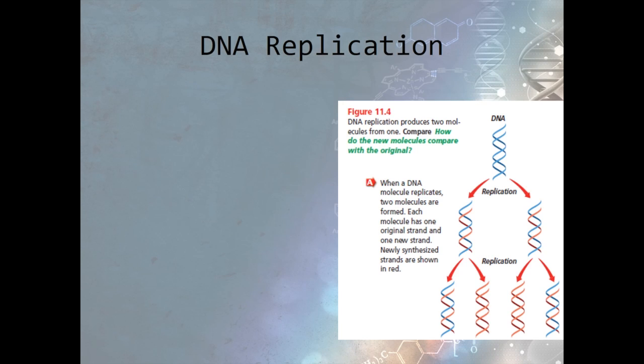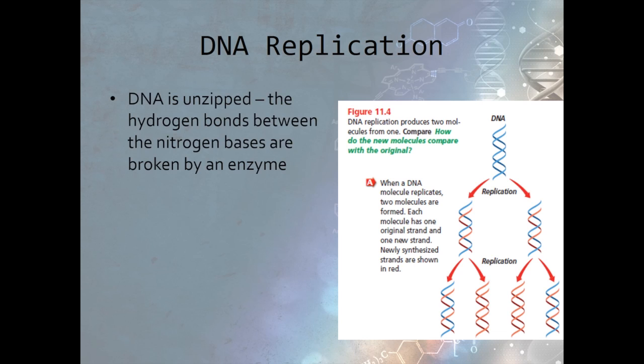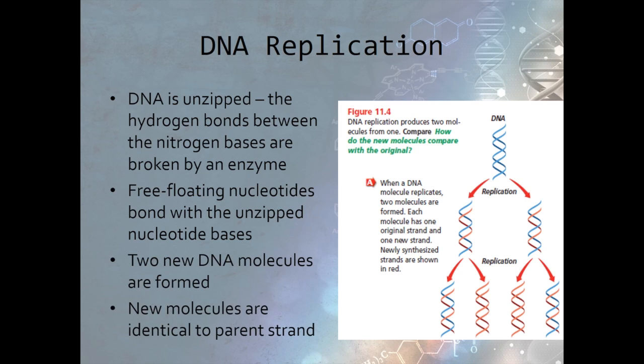New DNA molecules are formed through a process called replication. During replication, the DNA is unzipped by an enzyme that breaks the hydrogen bonds between the nitrogen base pairs. Now we have two separate nucleotide chains. Free-floating nucleotides bond with the unzipped nitrogen bases on each chain so that two new DNA molecules are formed that are identical to the original molecule.